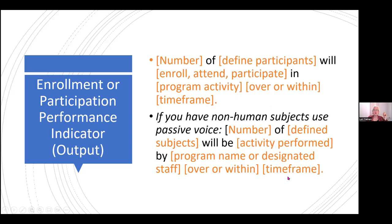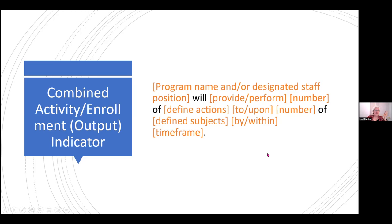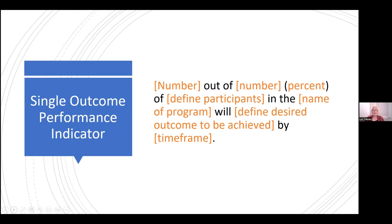For non-human subjects, use passive voice: 'Number of subjects will have this activity performed upon them by the program or designated staff over or within a time frame.' You can also combine these into a single output indicator: 'Program name and/or designated staff will provide or perform [number] actions to or upon [number] subjects by or within [time frame].' For outcomes, the basic template is: 'Number out of number (percent) of participant group in the program will achieve [what] by [when].'